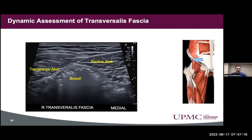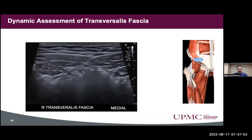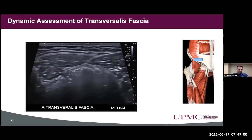Next we looked at the transversalis fascia to see if there may be a disruption. We wanted to find the transverse abdominis. For any type of hernias, it's a good idea to do this both in supine and standing, since standing may reproduce symptoms more frequently due to gravity. Having the patient bear down, we weren't really seeing any sort of disruption of that aponeurosis. There was no large defect or fat visualized in this region with Valsalva maneuver.